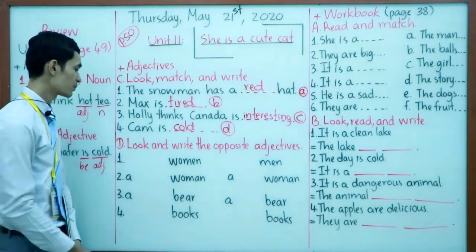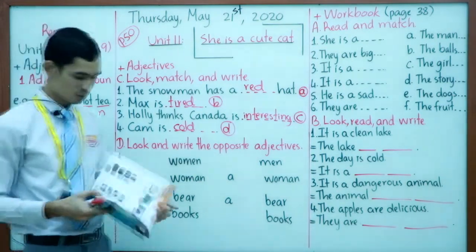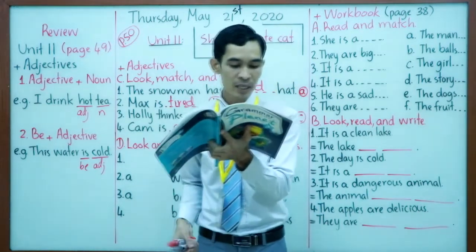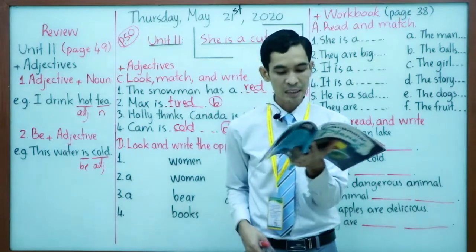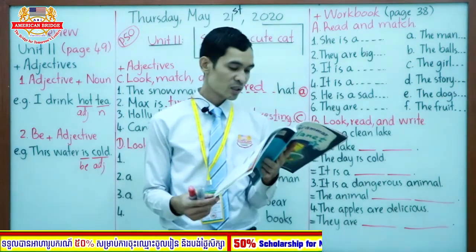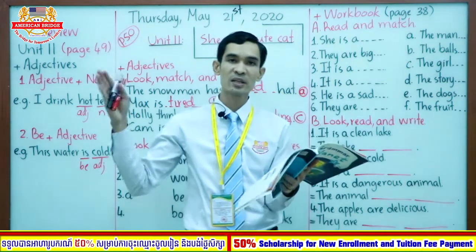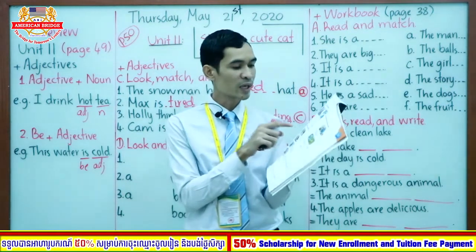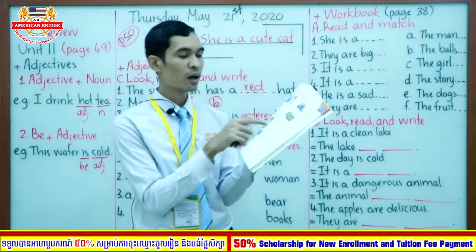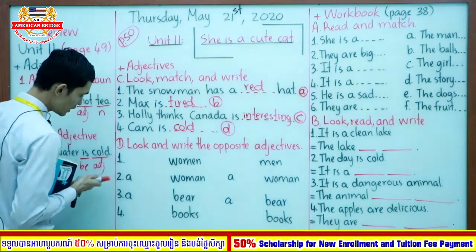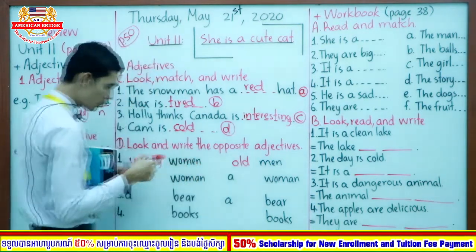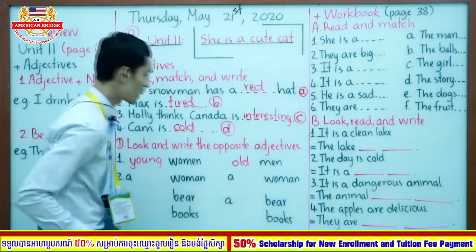Now let's go to Part D: look and write the opposite attitude. Use the words in the box. We have eight words: happy, white, old, thin, young, thick, black, sad. The eight words each have an opposite attitude. Example number one is given: the word young — young is opposite with old. Young women, old men.